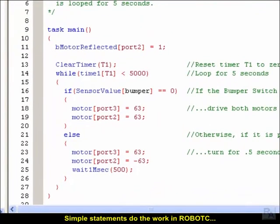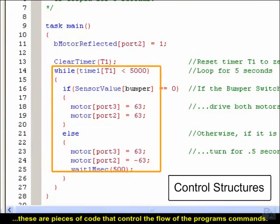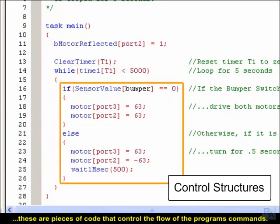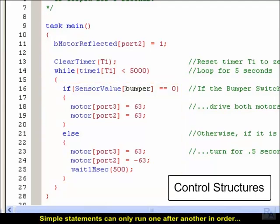Simple statements do the work in Robot C, but control structures do the thinking. These are pieces of code that control the flow of the program's commands, rather than issue direct orders to the robot. Simple statements can only run one after another in order, but control statements allow the program to choose the order that the statements are run.